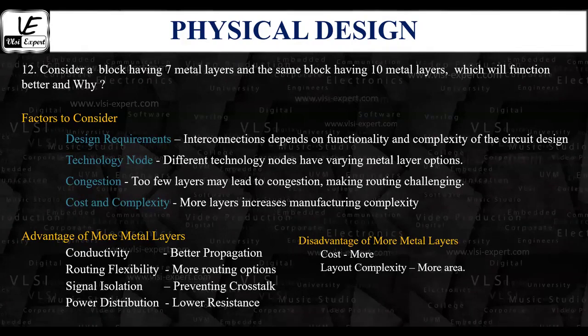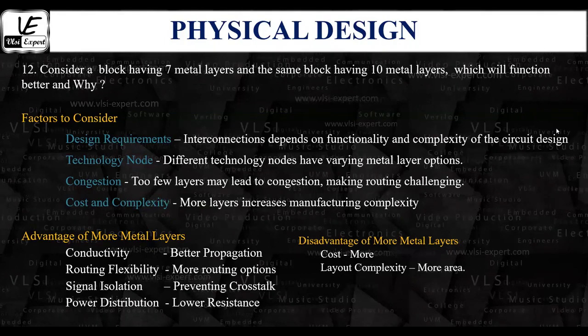The next factor is the technology node and foundry. Different technology nodes offered by foundries have varying metal layer options. For example, comparing 7 nanometer and 14 nanometer nodes: a design at 14 nanometer has a lesser transistor count than one at 7 nanometer. Fewer transistors require fewer metal layers for interconnections. Migrating from a higher technology node to a lower technology node will demand more metal layers.